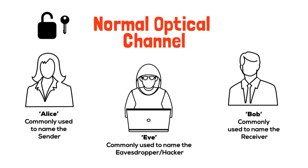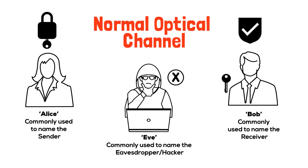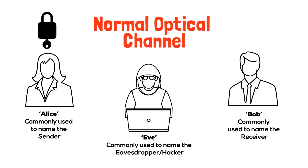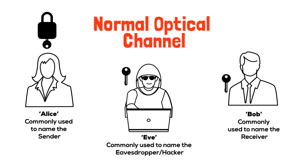Nowadays all messages are encrypted — Alice locks the message with a special private key, and the only way to unlock and read the message is with the corresponding private key, which Alice gave to Bob earlier. Eve can listen all she likes; she won't be able to unlock the messages without the key. The problem is, how does Alice send the key to Bob securely? If she sends it across a normal channel and Eve intercepts it, Eve will have the key and will be able to unlock all messages passing from Alice to Bob without them knowing it.